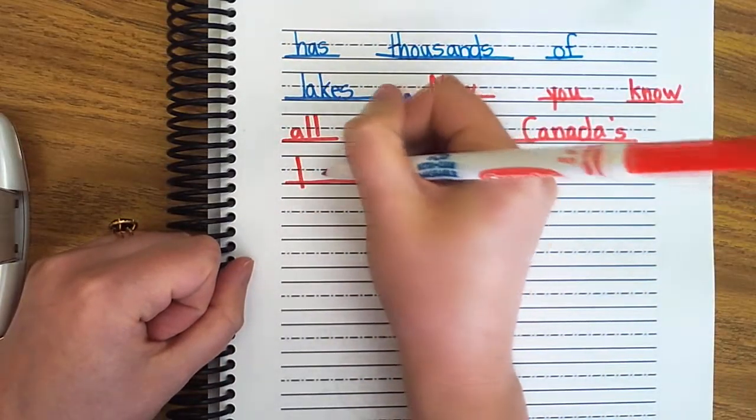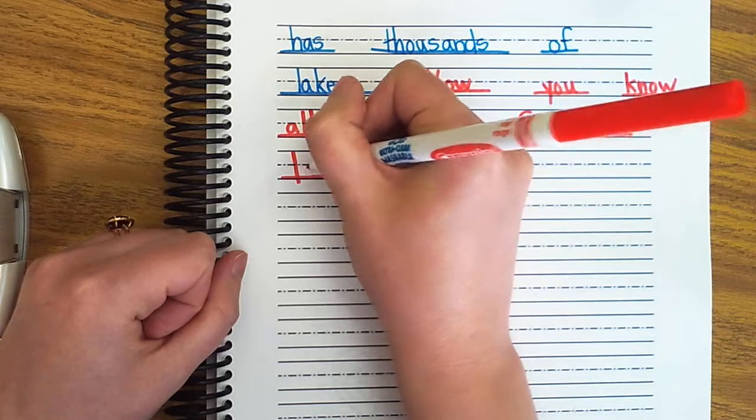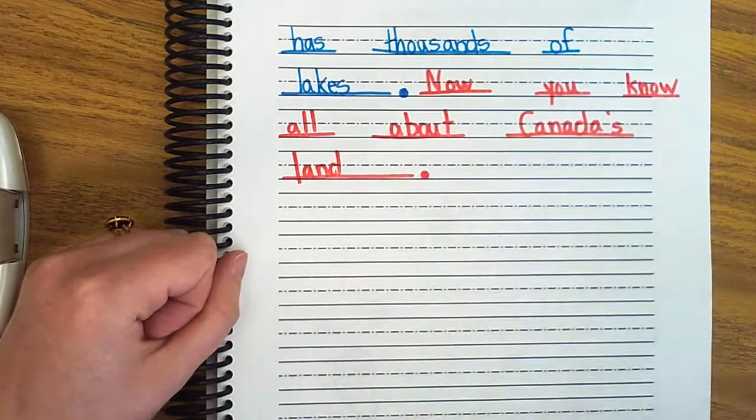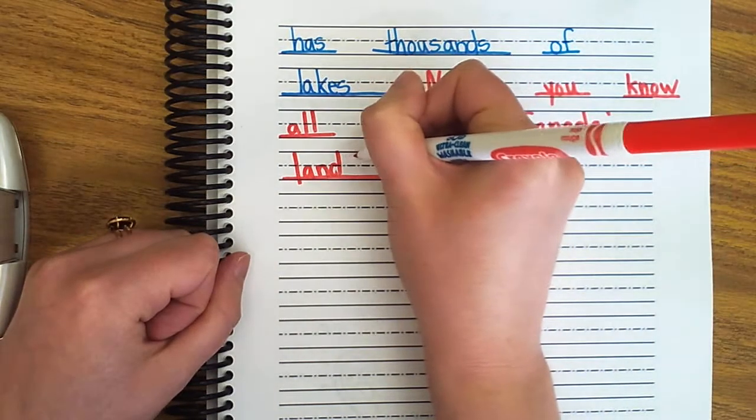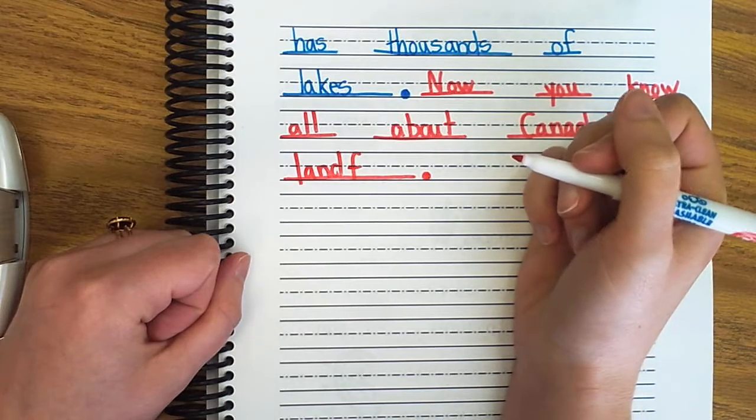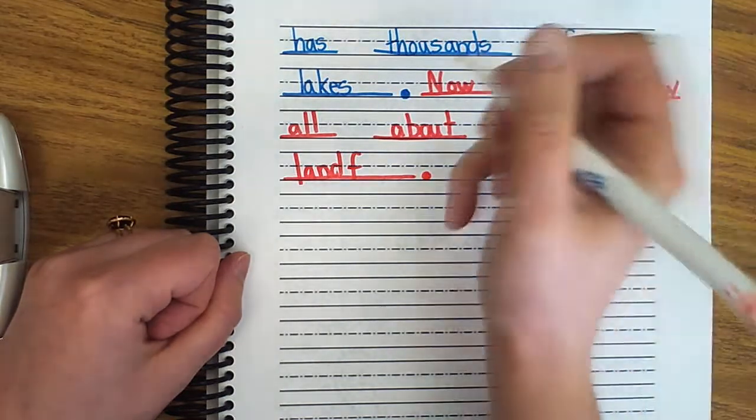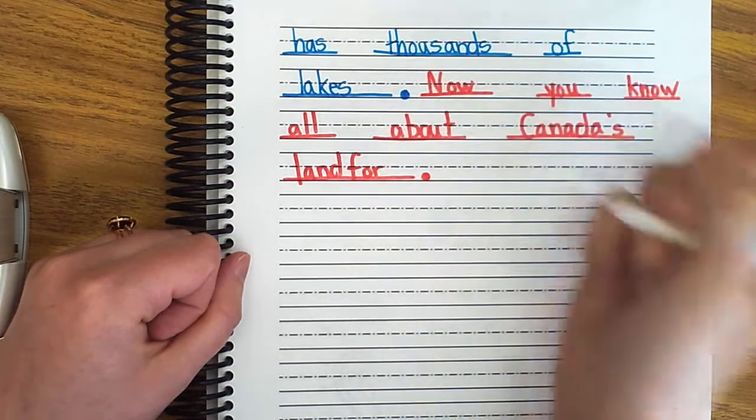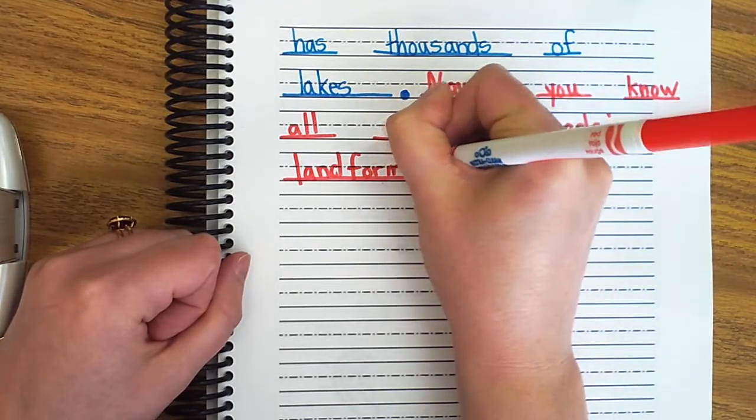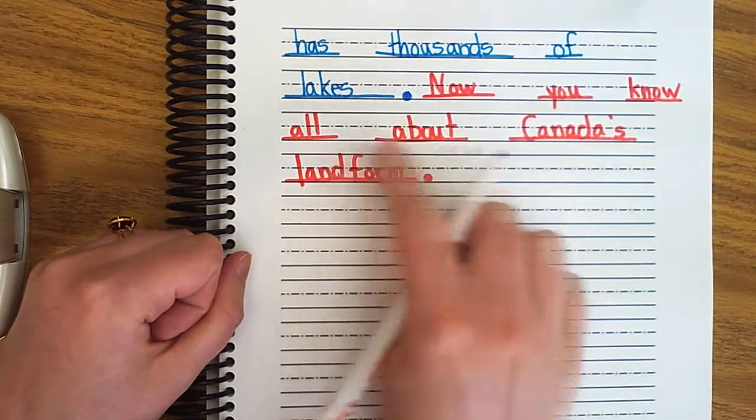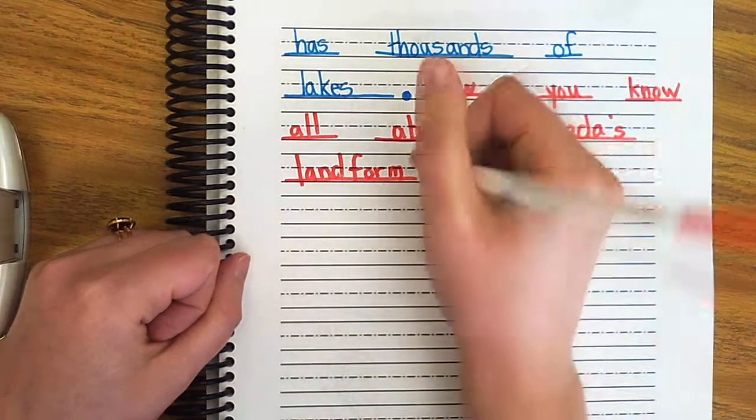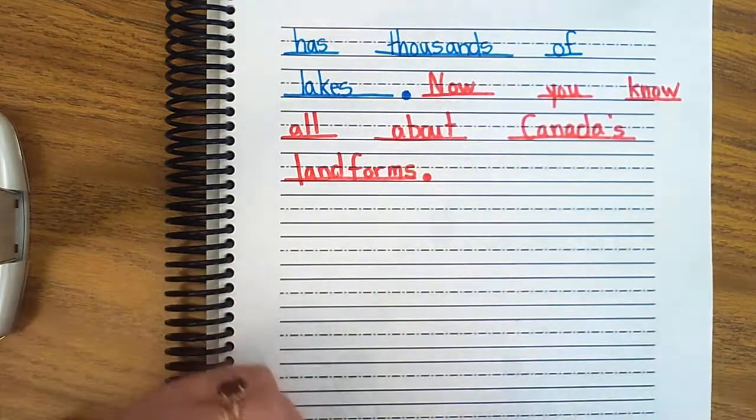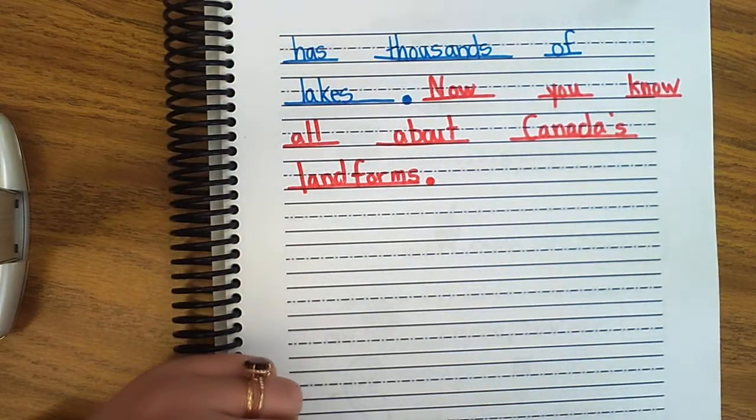Land. L-and. Well, I can spell and. A-N-D. Landforms. F-O-R. O-R. O-R like horse. Form. Forms. Now you know all about Canada's landforms. Suffix S at the end. That wasn't so bad, wasn't it, friends?